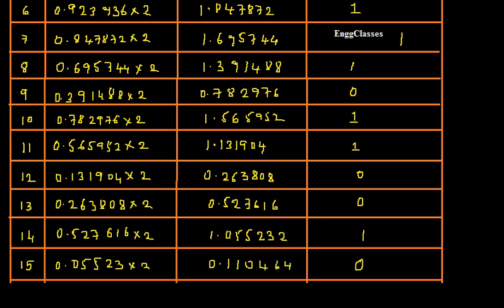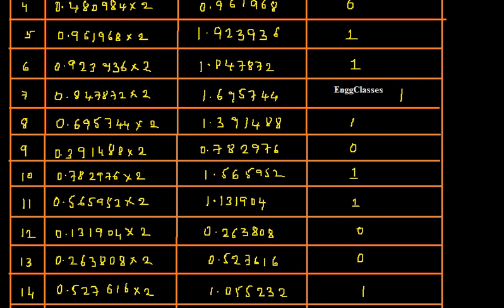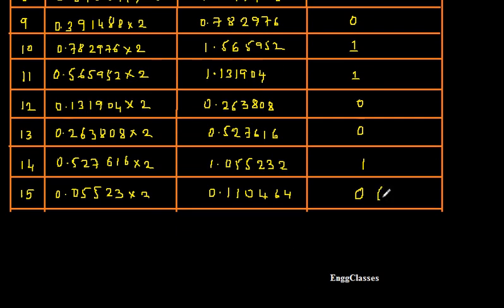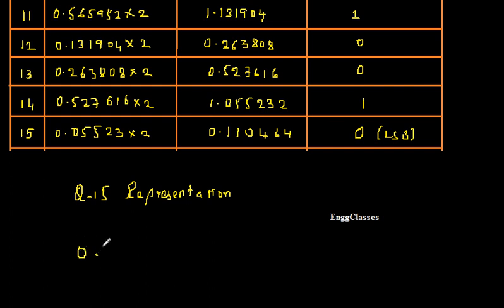So now the task is over and I have to write the Q15 representation. This I would call the MSB bit, and the last bit I would call the LSB bit. Now let me write the Q15 representation of the given number. I will start with 0 point — this is the signed bit. If it is 0, the number is positive; if it is 1, the number is negative. It is represented in 2's complement.